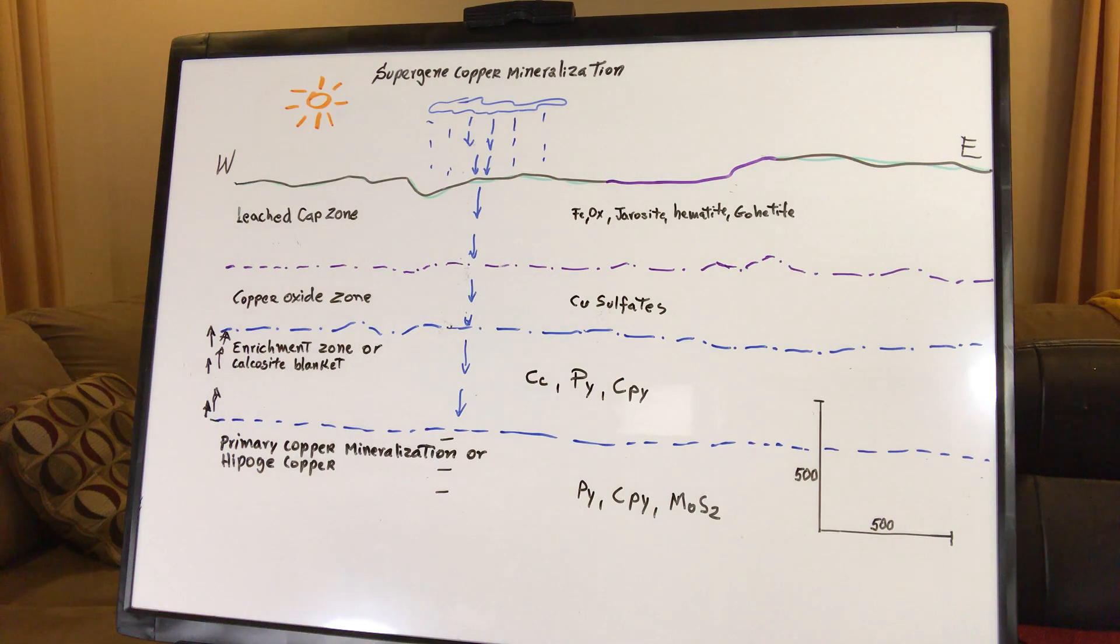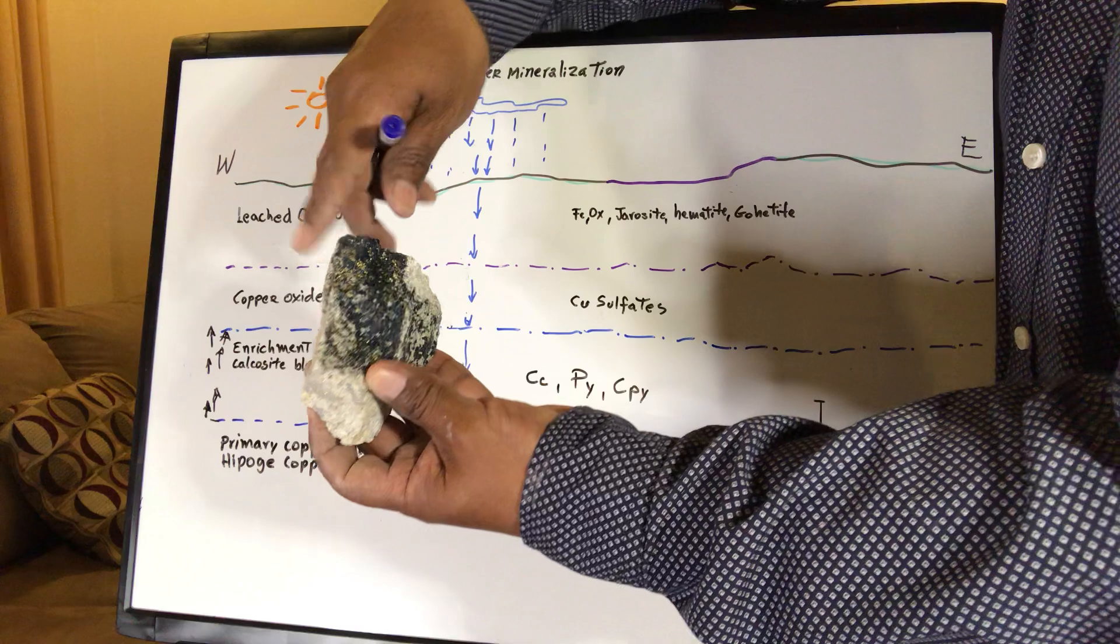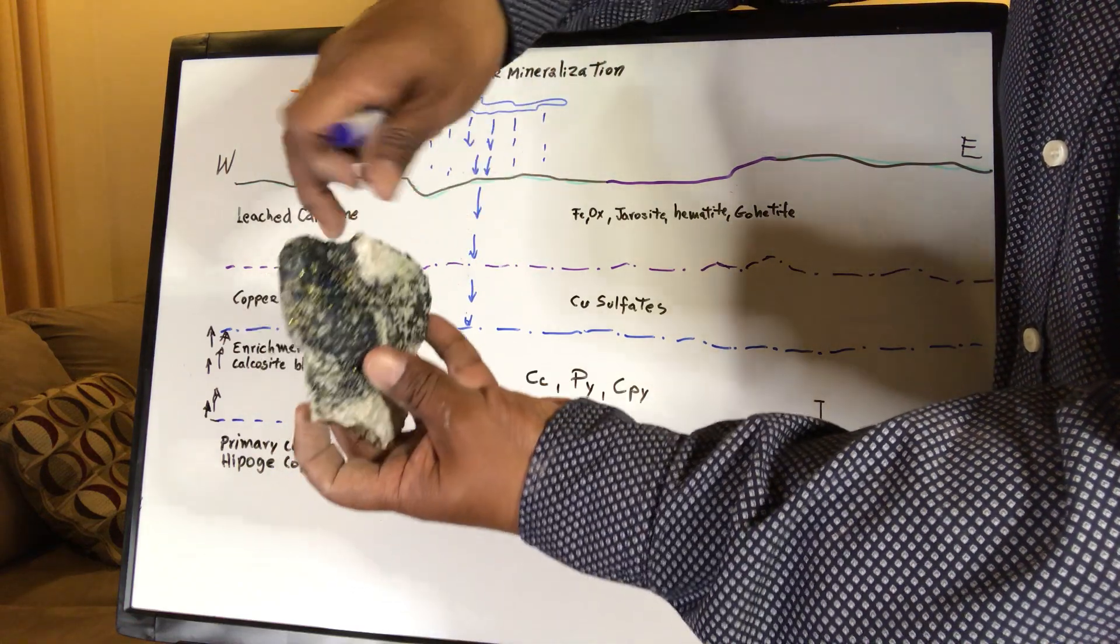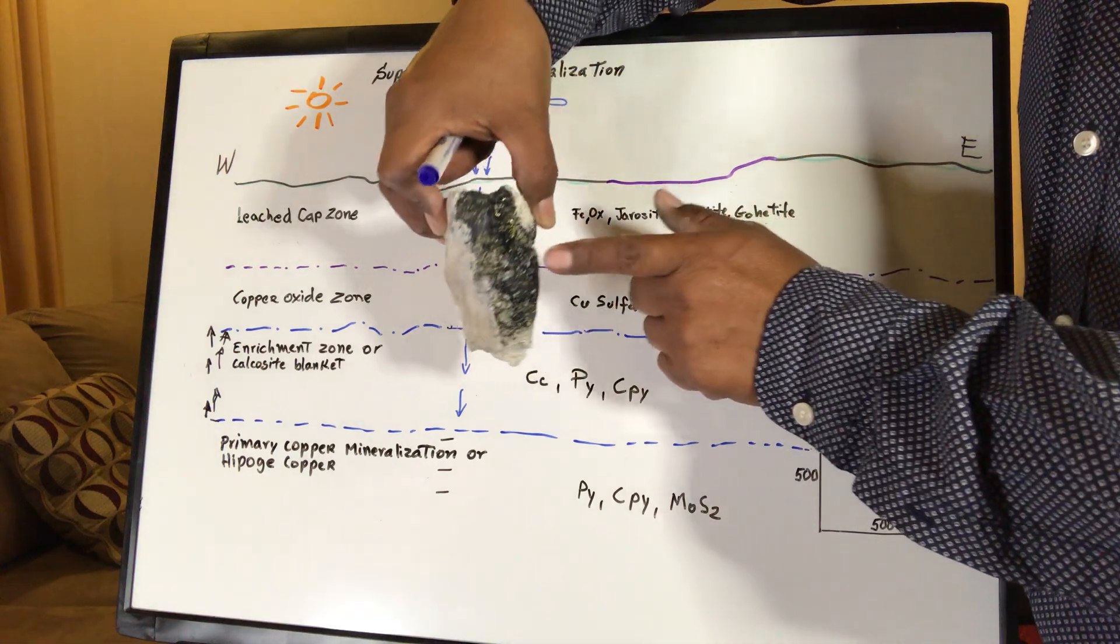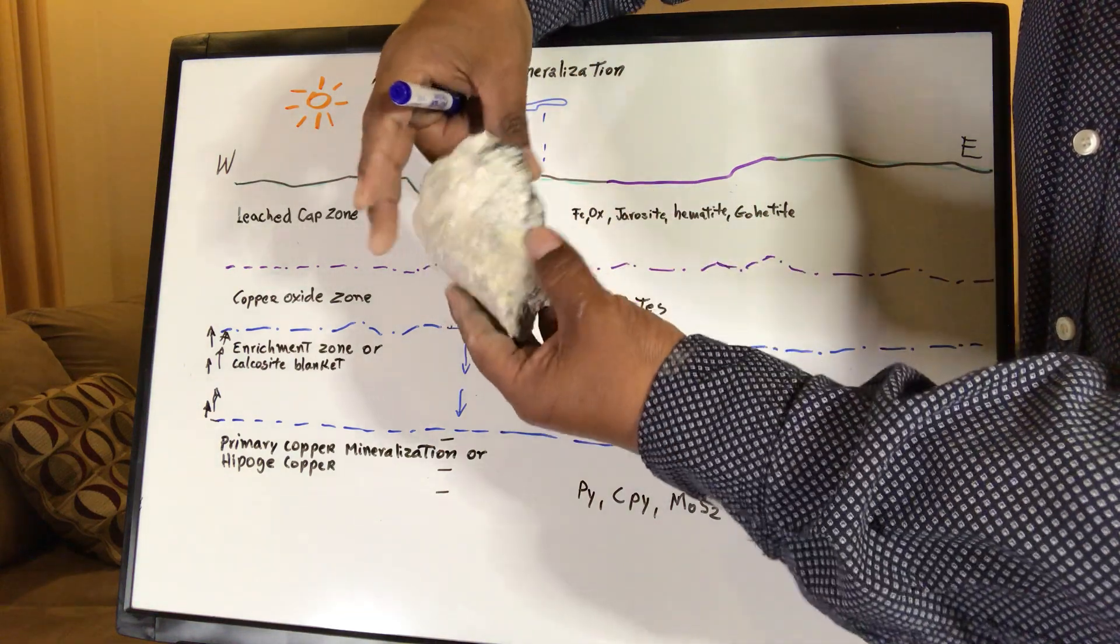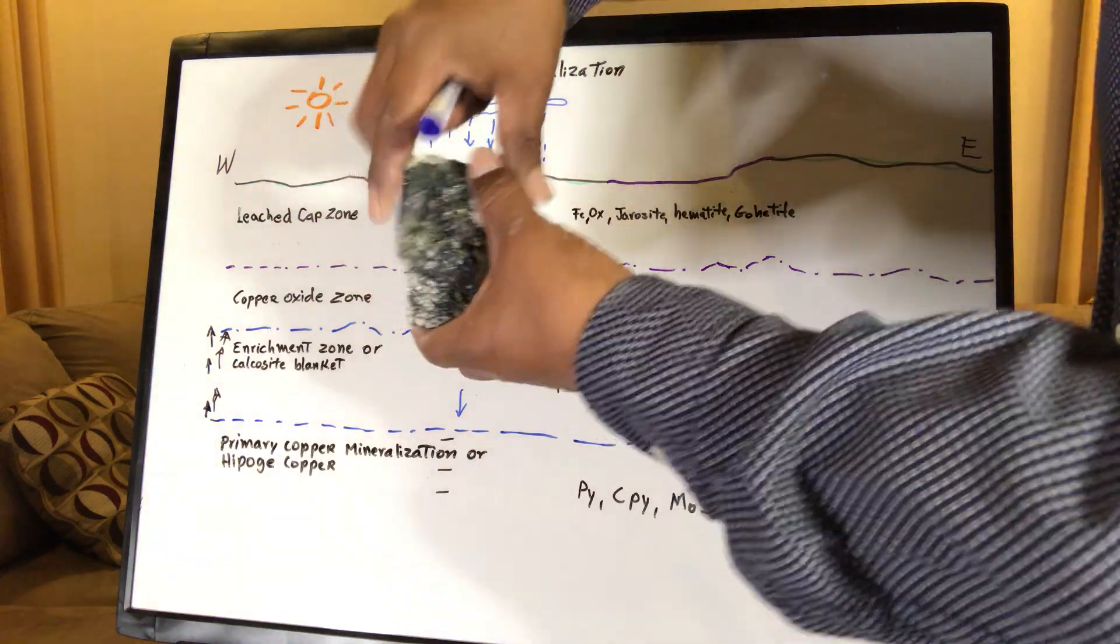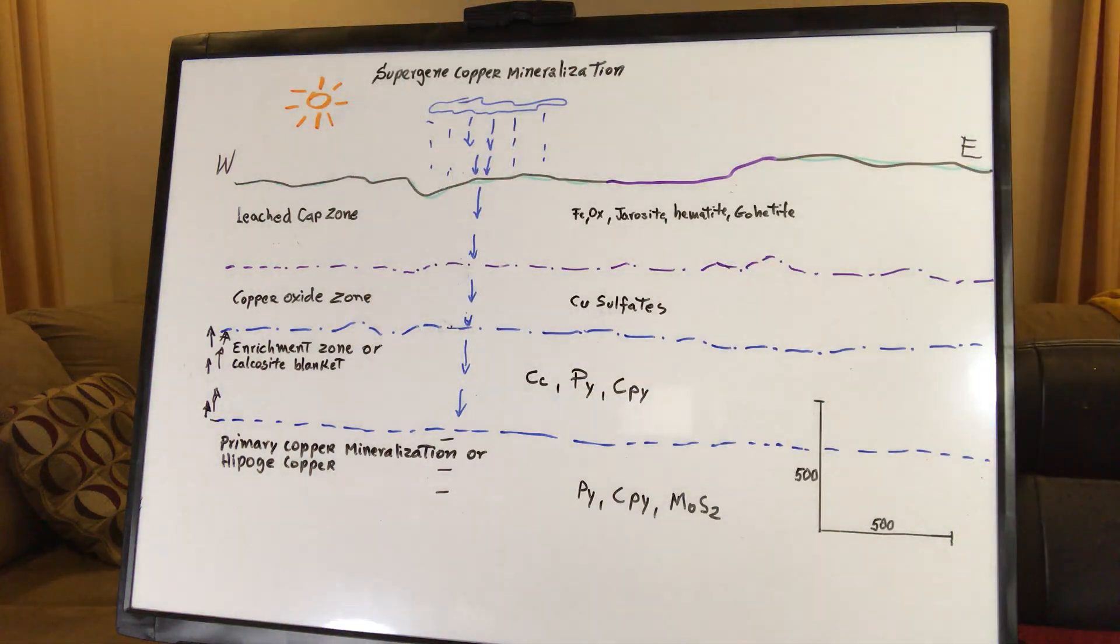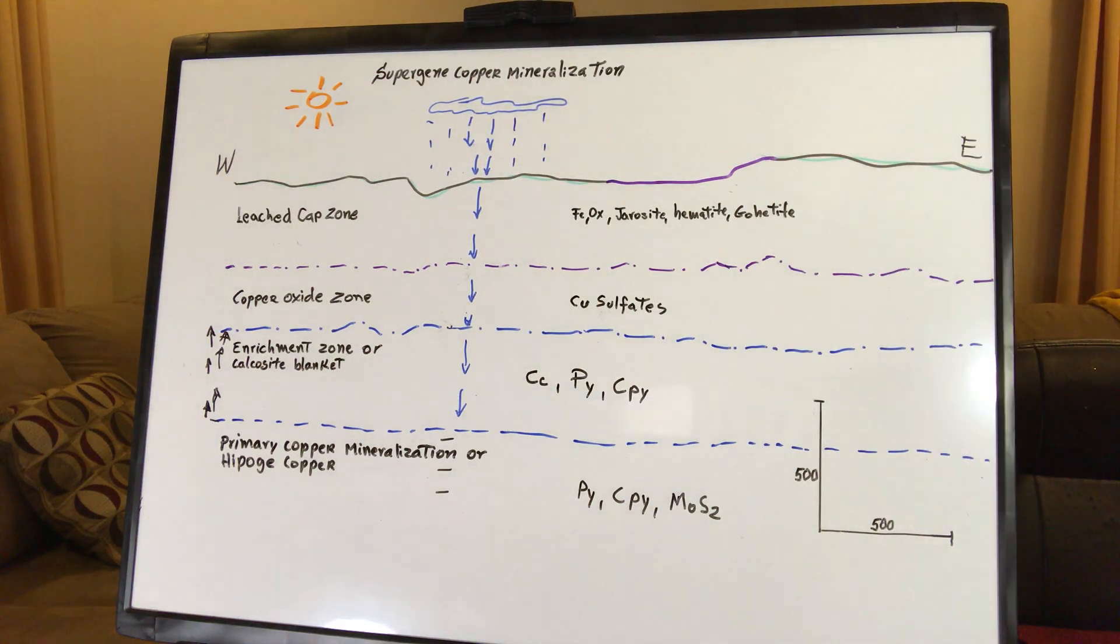And this is the other one. Other one like this. I think this is very nice. And we have chalcocite. But in some places, it's still, we can see the pyrite and probably like 30, 40% of replacement is chalcocite. We talk about the replacement. And so another one.